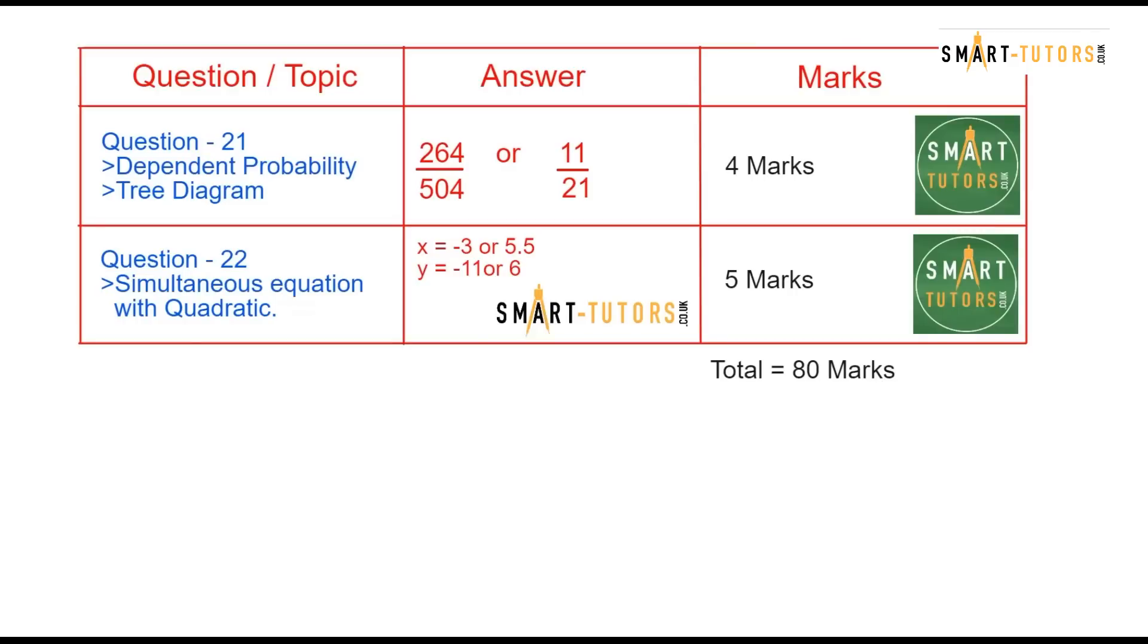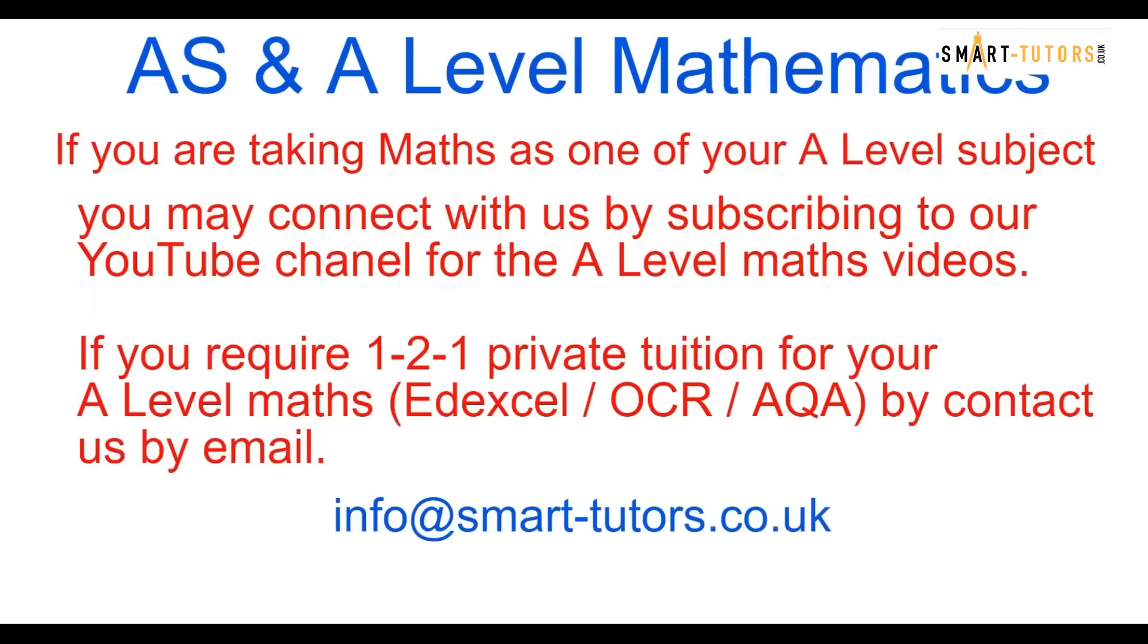Question number 22. Simultaneous equation with quadratics. So in the simultaneous equation, there's a linear equation given with a quadratic expression. So if you solve both equations, you get x answer as minus 3 or 5.5 and y answer as minus 11 or 6. That is the correct answer. That is the end of the marking scheme.